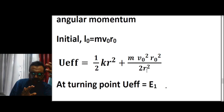These two values correspond to the perigee and apogee points of the orbit, as asked in the problem. Thus we come to the end of this problem. All three parts are solved, and that's the end of this video — thank you.